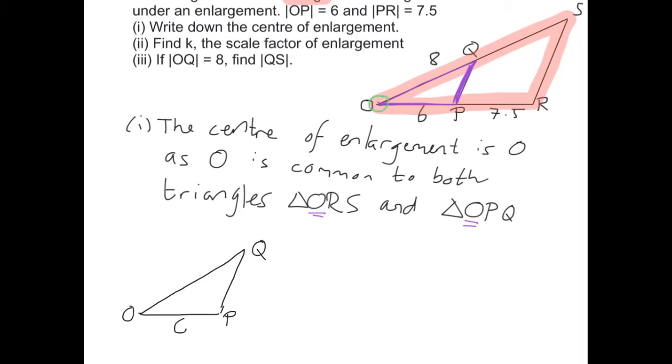We are told that this length is 6 and this length is 8. We also have a larger triangle which is ORS and in that case the length of the bottom side here is 6 plus 7.5. The total length of O to R will be 13.5.